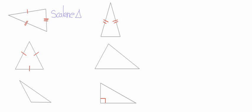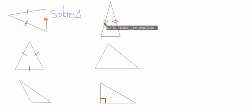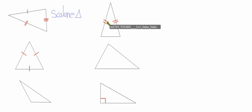Let's have a look at the next triangle. Here we have a triangle of which these two sides are equal in length. When we have a triangle with two sides equal, we call it an isosceles triangle.